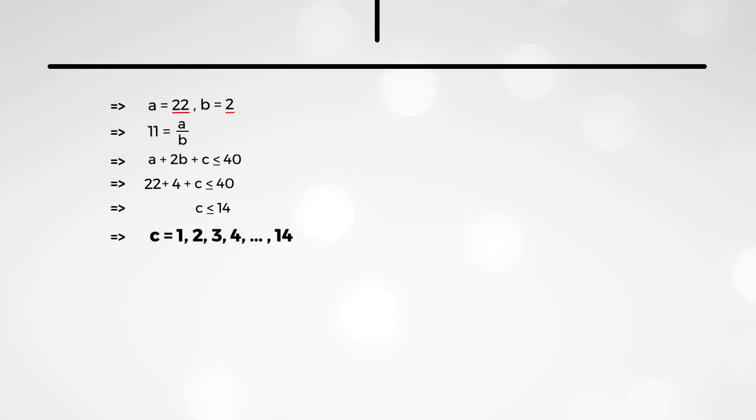So, our ordered triples are of the form 22, 2, 1, 22, 2, 2, and so on, all the way to 22, 2, and 14. And this gives you 14 additional ordered triples.